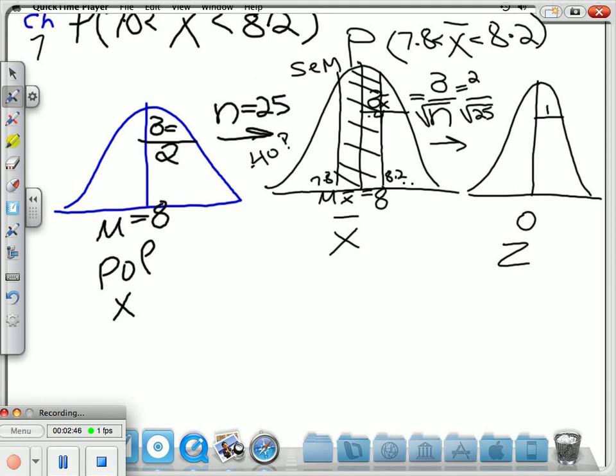And the only question is, what does 8.2 correspond to in terms of a z-score? What does 7.8 correspond to in terms of a z-score? And then by plugging in those two numbers, we'll then find the area between them.